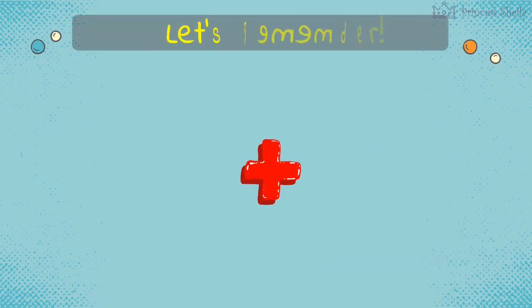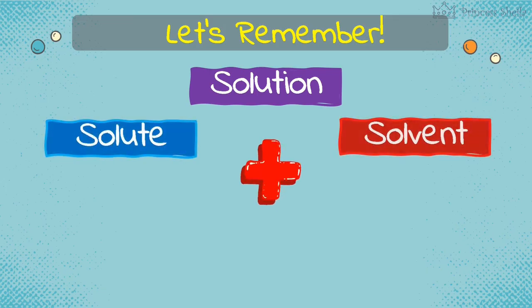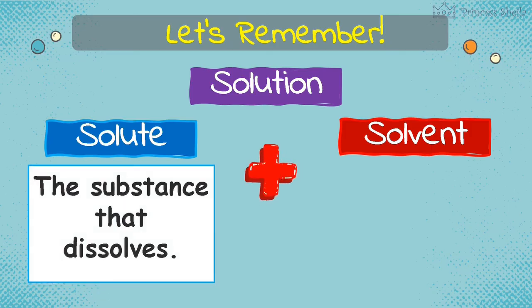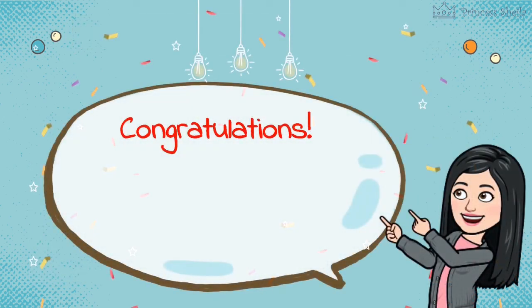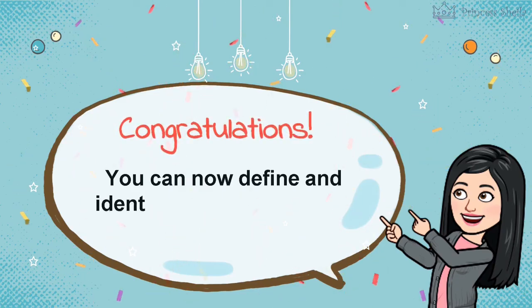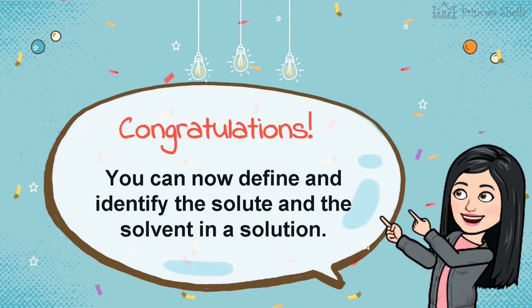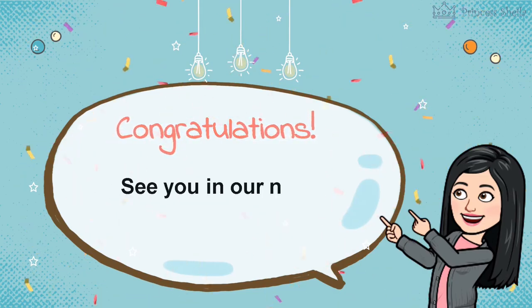Let's remember: a solution is a homogeneous mixture made up of solute and solvent. The solute is the substance that dissolves, while the solvent is the substance used to dissolve the solute. You can now define and identify the solute and the solvent in a solution. See you in our next lesson!